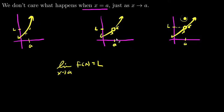This idea — where I don't even need a value at A — is where limits will be useful in calculus. Spoiler alert: eventually we're going to try to take a limit of a quotient where the numerator and denominator are both approaching zero. You can't do zero divided by zero, but we can find the limit.